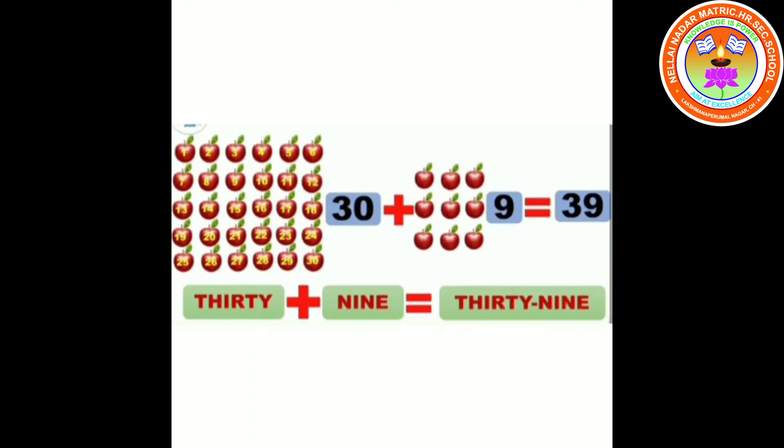39. 30 plus 9 equals 39. T-H-I-R-T-Y, thirty. N-I-N-E, nine. Thirty-nine.